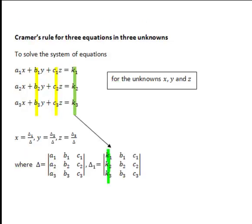Now delta1 is also a matrix determinant but here the constants on the right hand side of our system of equations go into the first column of delta1 while the coefficients of the second and third unknowns respectively then go into the second and third columns of delta1.